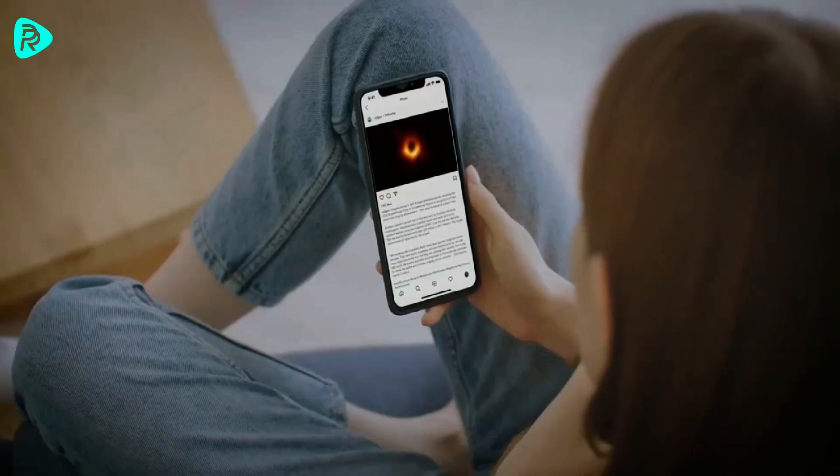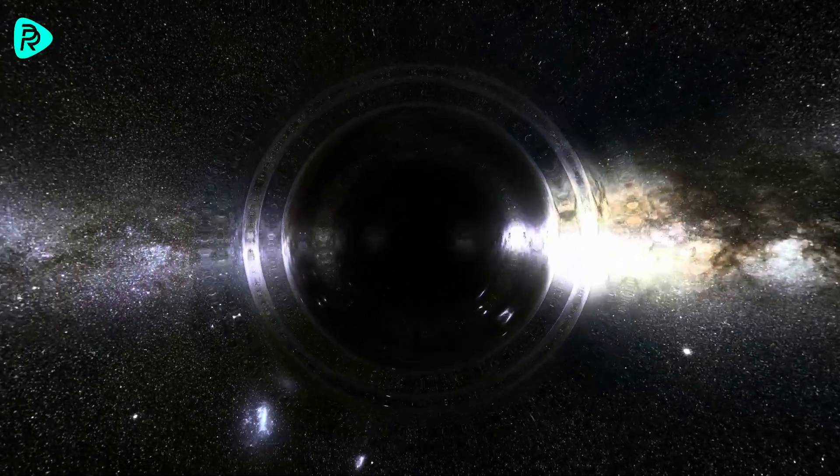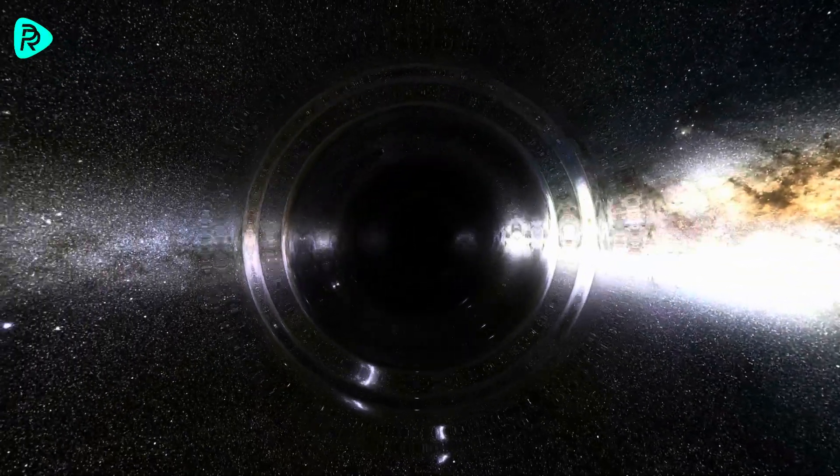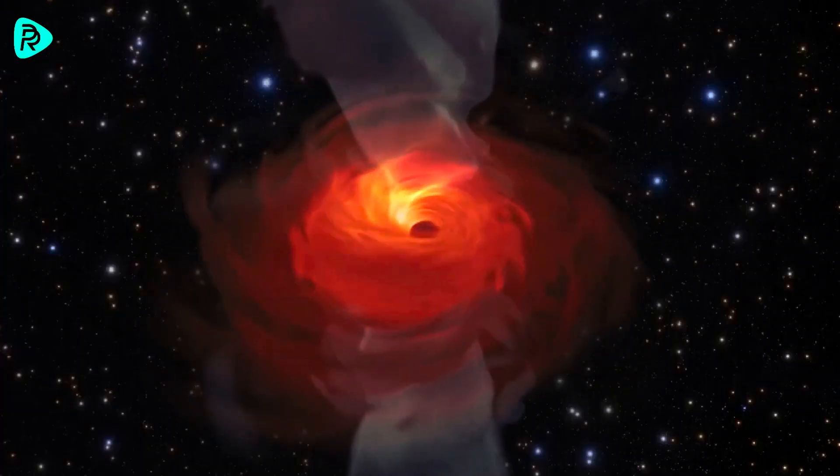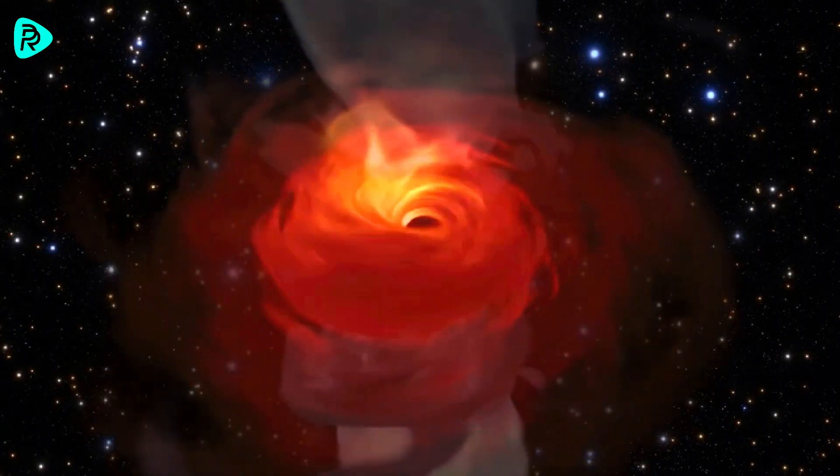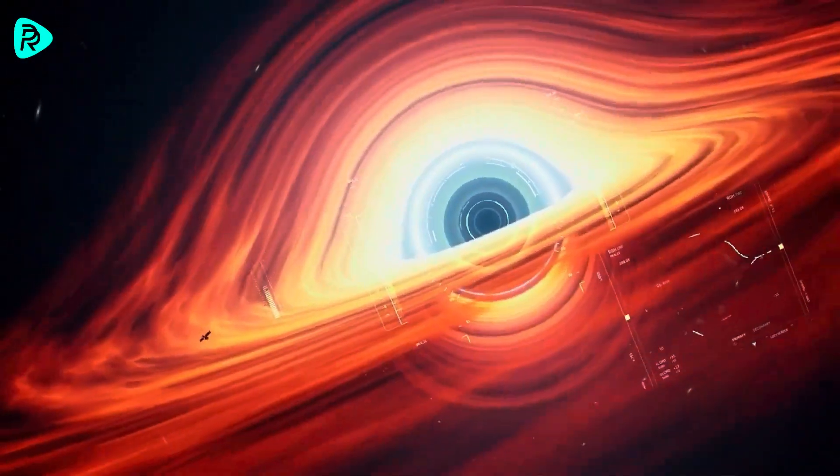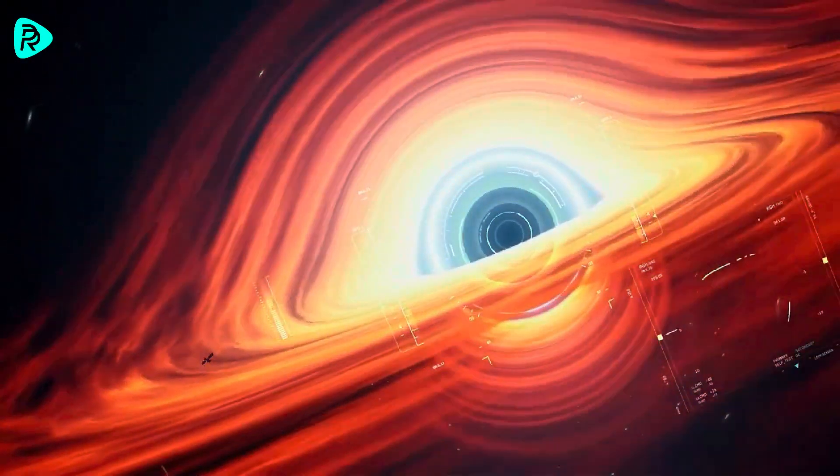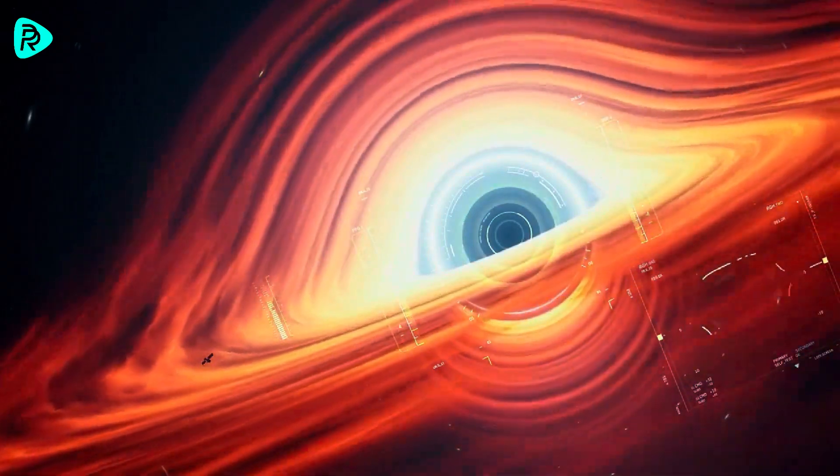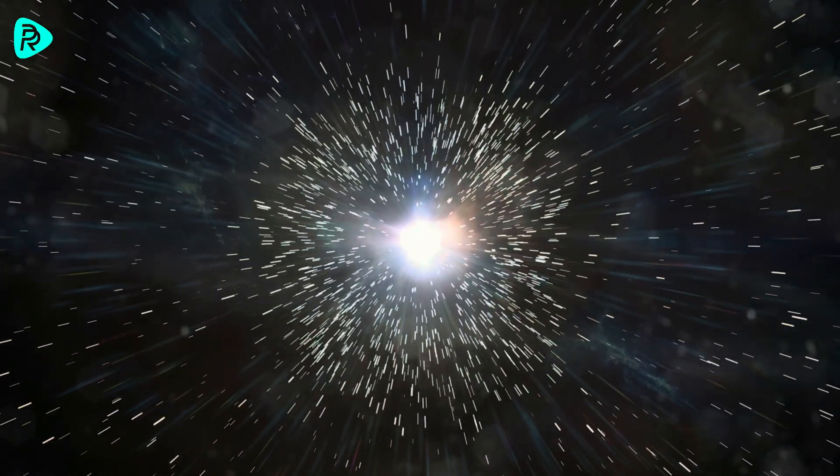Black holes form when stars can no longer withstand their own gravity and start to collapse in on themselves. This happens when stars are close to running out of fuel. The balance between the star's gravity and its pressure starts to fade. As the nuclear reactions within the star come to an end, the pressure cannot match the star's gravity and the implosion starts. During this, if the star's mass is more than 40 solar mass, a huge explosion occurs, which is called a supernova.